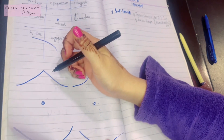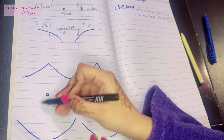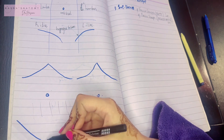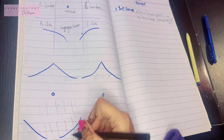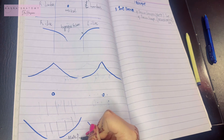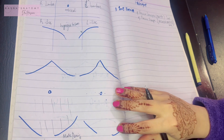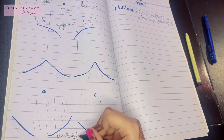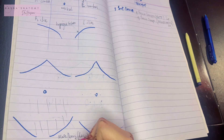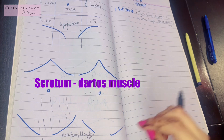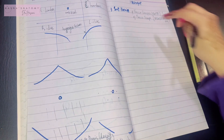The superficial fatty layer, the fascia of Camper, covers the entire area. As it goes towards the external genitalia, in the male penis this fascia remains the same fascia of Camper, just devoid of fat. In the scrotum, the fascia of Camper becomes the dartos muscle.